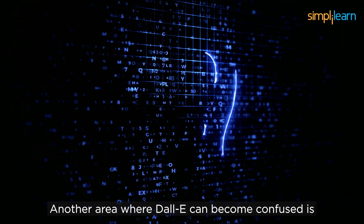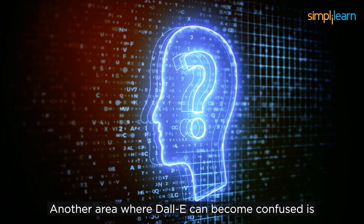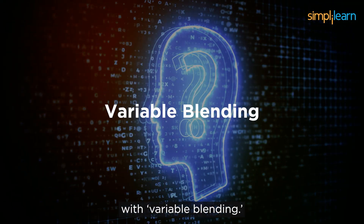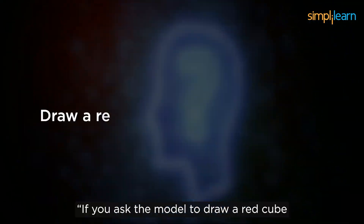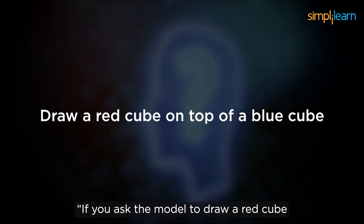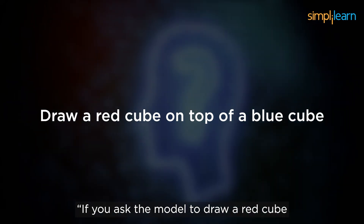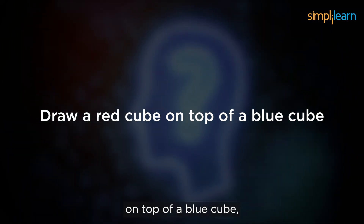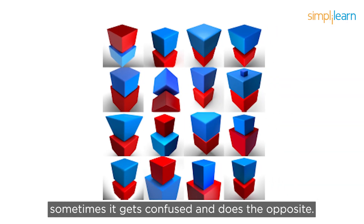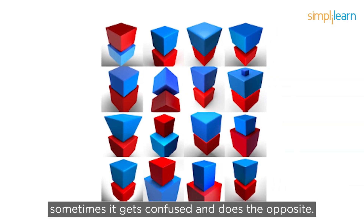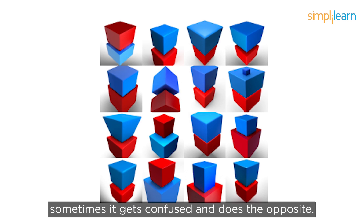Another area where DALL-E can become confused is with variable blending. If you ask the model to draw a red cube on top of a blue cube, sometimes it gets confused and does the opposite.